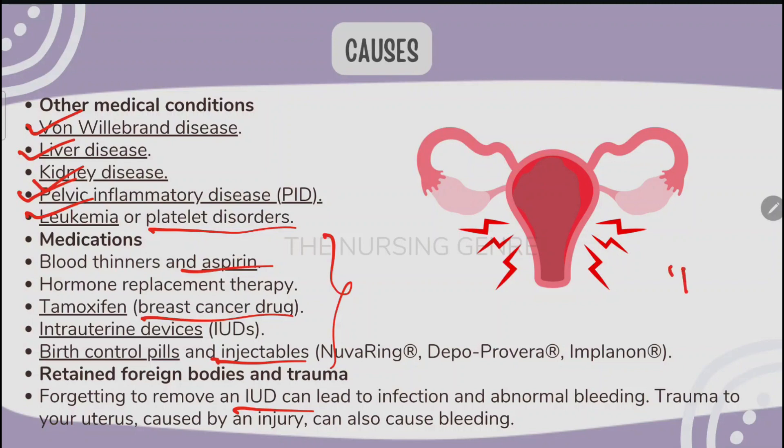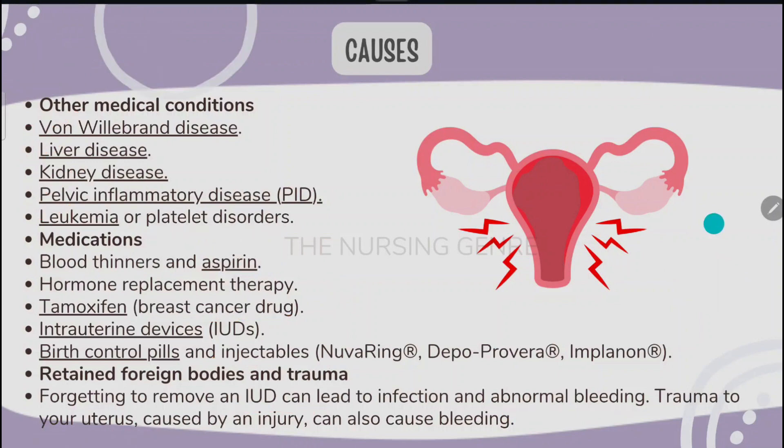A retained foreign body and trauma — such as forgetting to remove an IUD — can lead to infection and abnormal bleeding. These are the main causes of abnormal uterine bleeding.